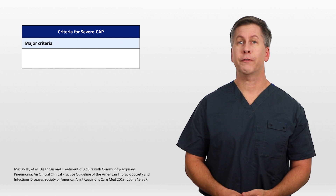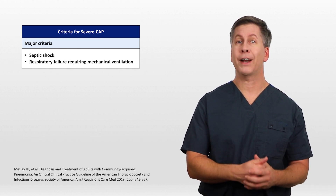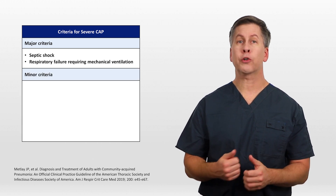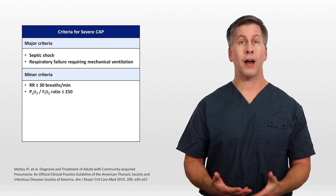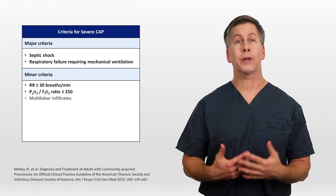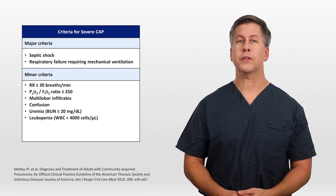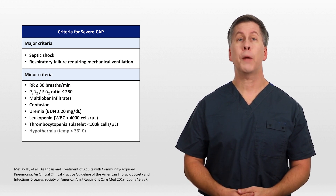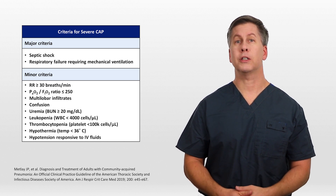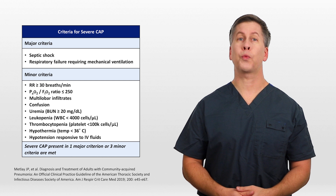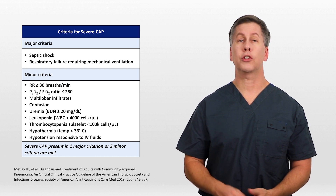So I just mentioned the term severe pneumonia, which in fact has specific criteria used to define it. The two major criteria for severe CAP are septic shock and respiratory failure requiring mechanical ventilation. The nine minor criteria are: respiratory rate of 30 or more, a P to F ratio under 250, multi-lobar infiltrates, confusion, a BUN of 20 or more, an abnormally low white count, a platelet count under 100,000, hypothermia, and hypotension responsive to IV fluids. Severe CAP is said to be present when at least one major criterion or at least three minor criteria are met.